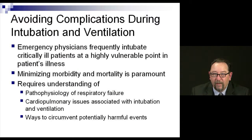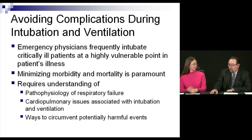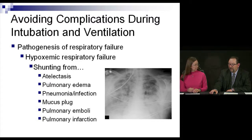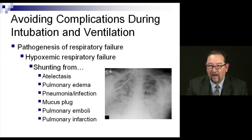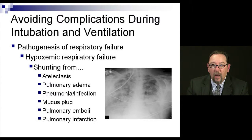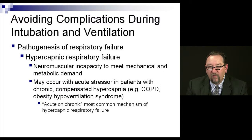We frequently intubate critically ill patients and we want to minimize morbidity and mortality. Some of this requires knowing a little bit about vents and the pathology, and there are some really easy ways to circumvent bad outcomes if you recognize and act on them. Part of this is knowing who and why you're intubating. The first thing we'll talk about is hypoxemic respiratory failure, which comes from atelectasis, pulmonary edema, pulmonary infection, mucus plugging, pulmonary emboli, pulmonary infarction, blast lung, and more.